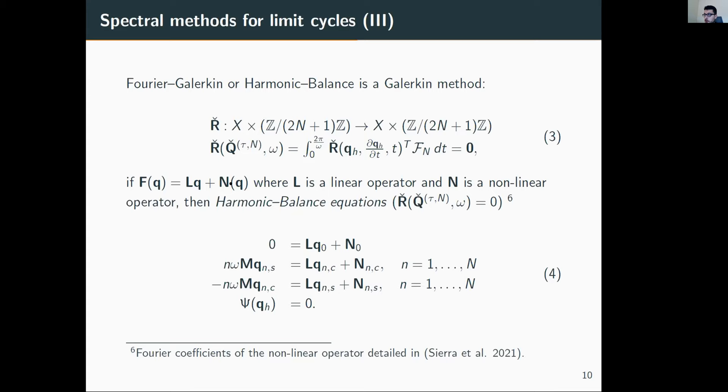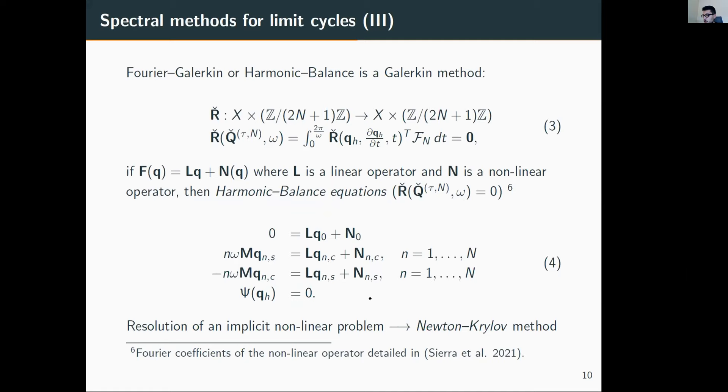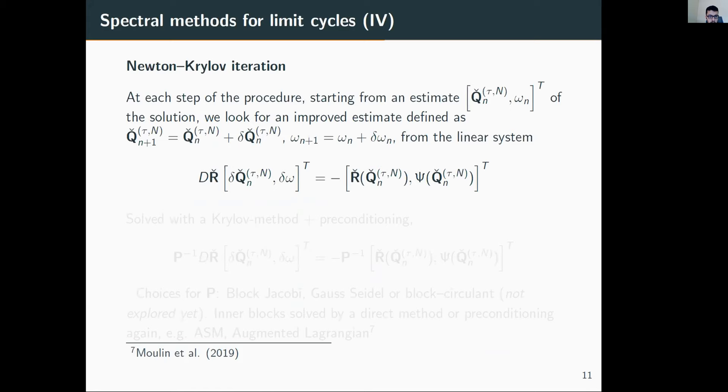If we suppose the right-hand side is divided as a linear operator and non-linear operator, we can write it systematically where N are the Fourier coefficients—the cosine and sine transforms. Resolution of this implicit system is intensive in memory, so we use Newton's method. At each step, we solve a linear problem where DR is the Jacobian of the system, also evaluated analytically to achieve the solution faster.